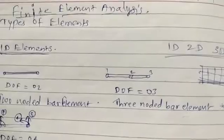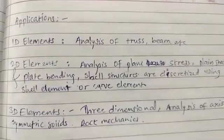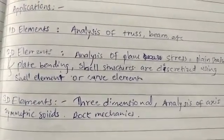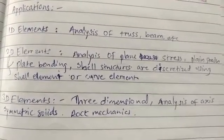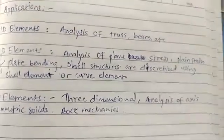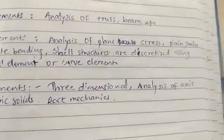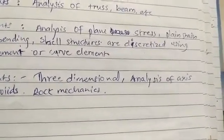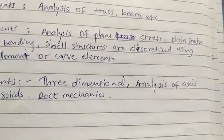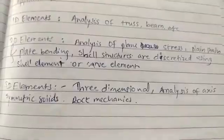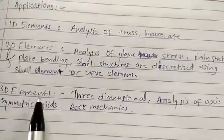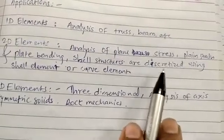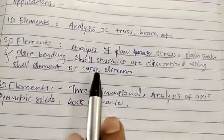Now we will see the applications of these elements. Applications of 1D elements include analysis of truss, beam, etc. In the analysis of a truss, the two-noded bar element and three-noded bar element can be used, whereas in the analysis of a beam we can use the beam element. The 2D elements are used for analysis of plane stress, plane strain, plate bending, and shell structures.